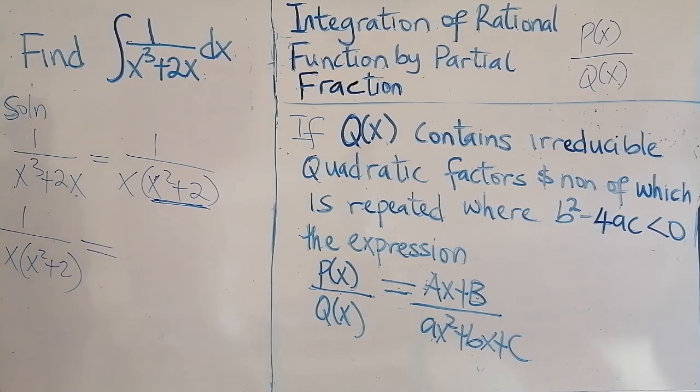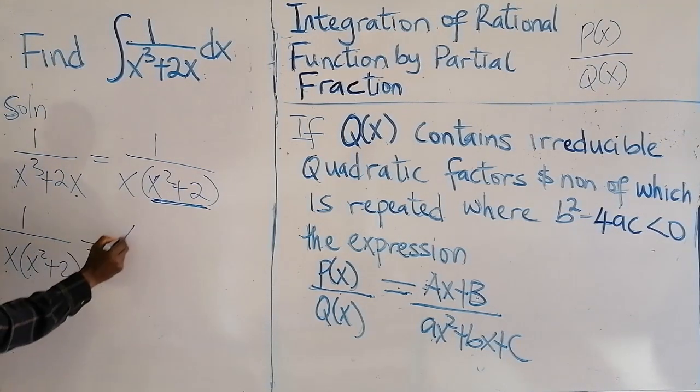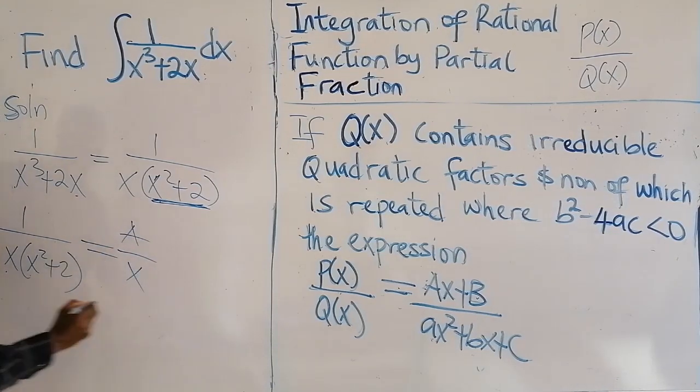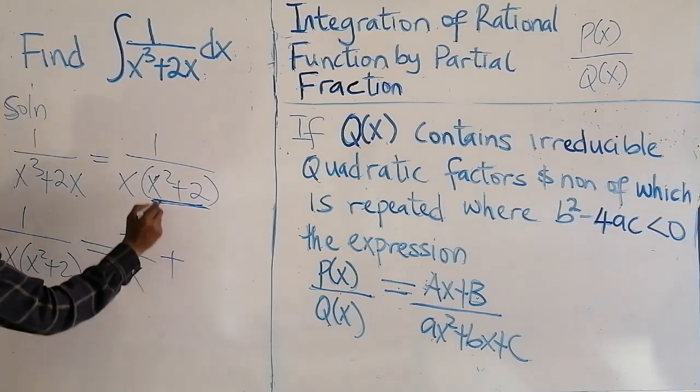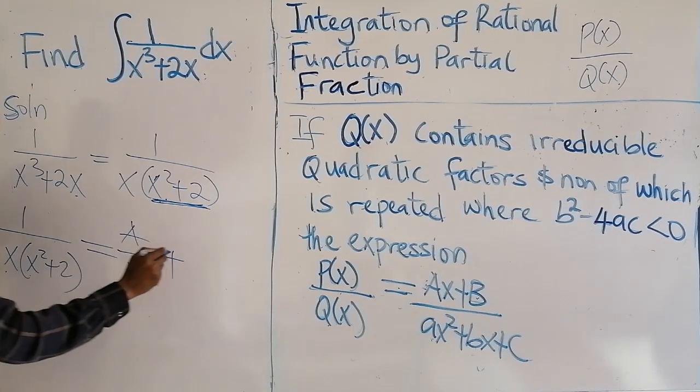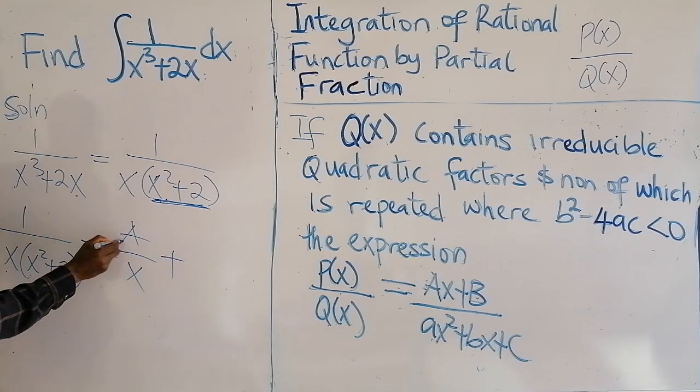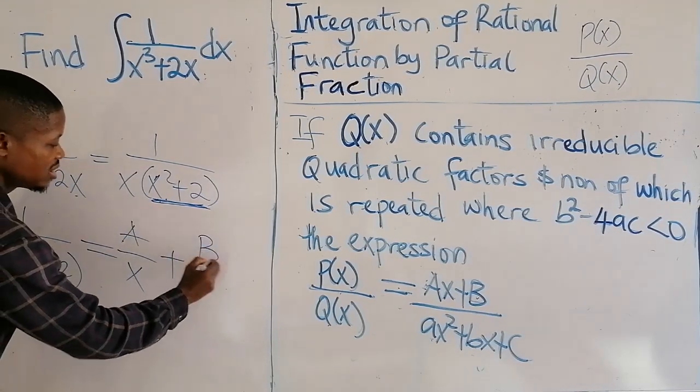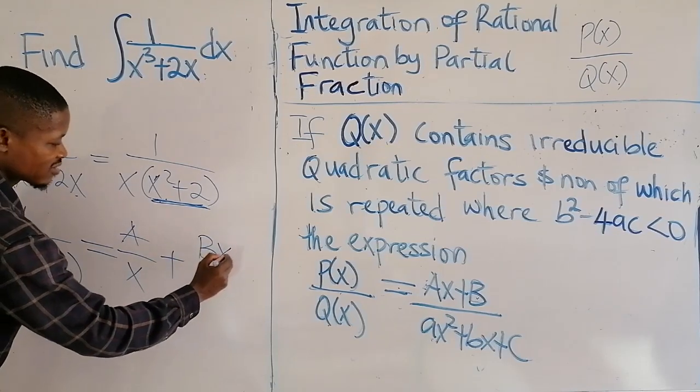X times X squared plus 2. This will be equal to now. The first one is a linear factor, so that will be A over this. Then the second one, which is an irreducible, will now become what? Your first constant is A,